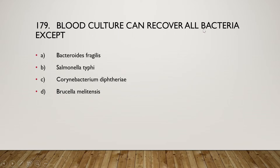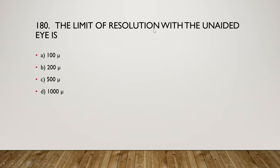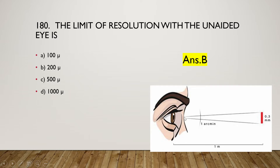The next question: blood culture can recover all bacteria except Bacteroides fragilis, Salmonella typhi, Corynebacterium diphtheriae, or Brucella melitensis? The right answer is option C, Corynebacterium diphtheriae. Next: the limit of resolution with the unaided eye is 100 micron, 200 micron, 500 micron, or 1000 micron? The right answer is option B, approximately 200 microns. By our eye we can distinguish between two points that are more than 0.2 or 0.3 millimeters, or more than 200 micrometers apart.